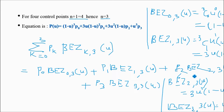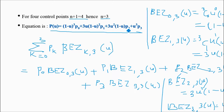By putting all the values together, the equation p(u) for four control points becomes: (1 minus u) cubed times p0 plus 3u(1 minus u) squared times p1 plus 3u squared(1 minus u) times p2 plus u cubed times p3. That is the equation for four control points.